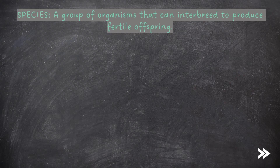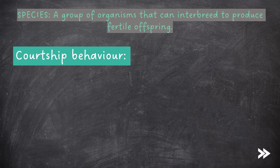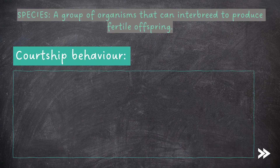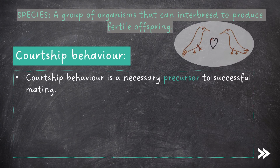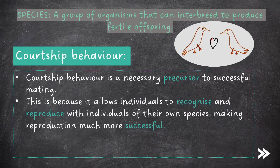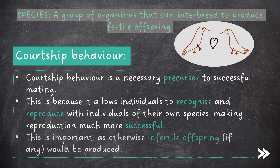Then we need to know about courtship behaviour. Courtship behaviour is a necessary precursor to successful mating. This is because it allows individuals to recognise and reproduce with individuals of their own species, making reproduction much more successful. This is important, as otherwise infertile offspring, if any, would be produced.